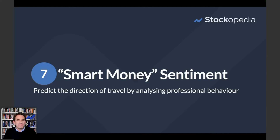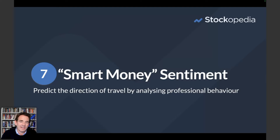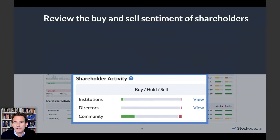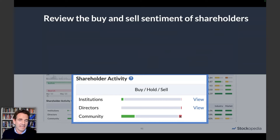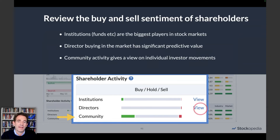Lastly, let's look at smart money sentiment — I was so excited when we introduced this to the stock report. Right here on the stock reports, you see the buy and sell sentiment of shareholders. You can see in green changes in buy ownership, in red any selling, and gray represents holds. This shows institutions have been accumulating over recent months, directors have actually been selling a little, and the community has been buying quite a lot — there's been a big increase in Stockopedia community ownership recently, skewed towards the buys.